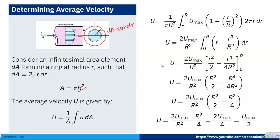The average velocity is given by U = (1/A) ∫ u dA. Substituting A = πR² and dA = 2πr dr, with the velocity profile u = u_max × (1 − (r/R)²), the pi terms cancel, giving U = (2 u_max / R²) × ∫₀ᴿ [r − r³/R²] dr.